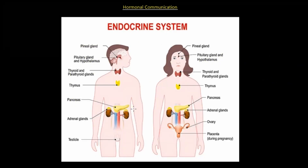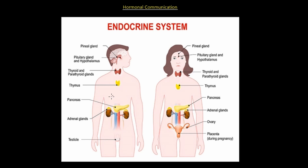Here is the endocrine system, showing how many different organs it involves. We have the pineal gland in the brain, the pituitary and hypothalamus, which we've discussed already, and the thyroid and parathyroid glands. The thymus — the training center for immune cells — also releases hormones. The pancreas releases insulin and glucagon, the adrenal glands release plenty of hormones, and the testes in males release hormones like testosterone. In females, the ovary is the sexual organ that produces hormones, along with the placenta during pregnancy.